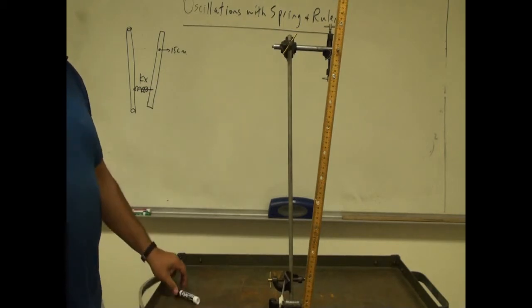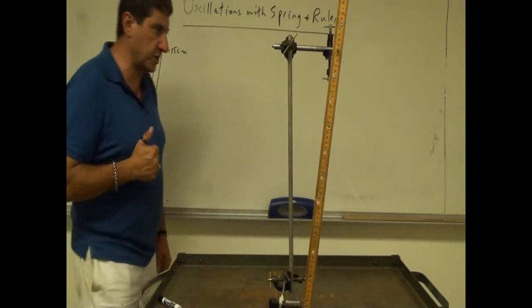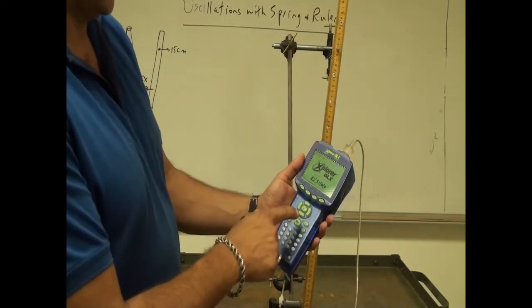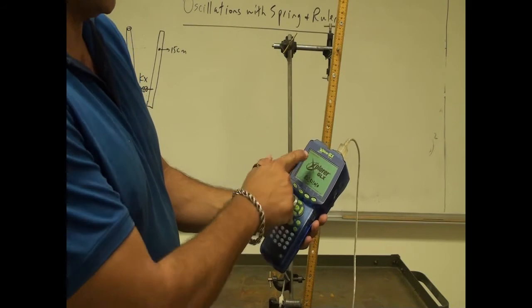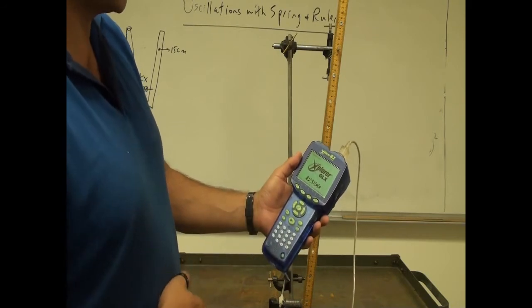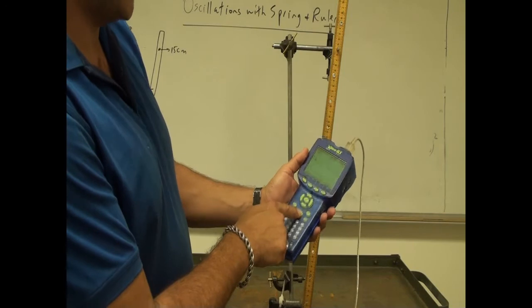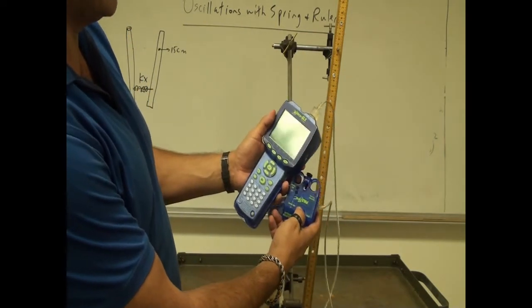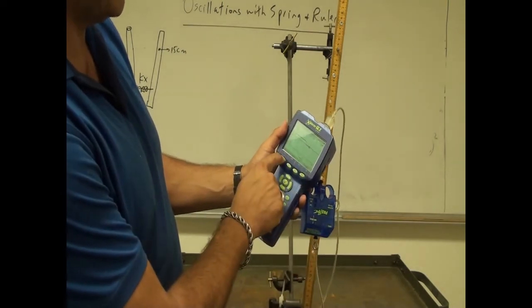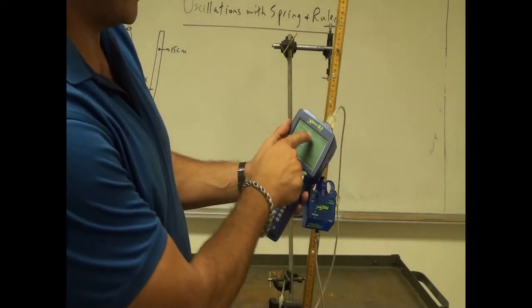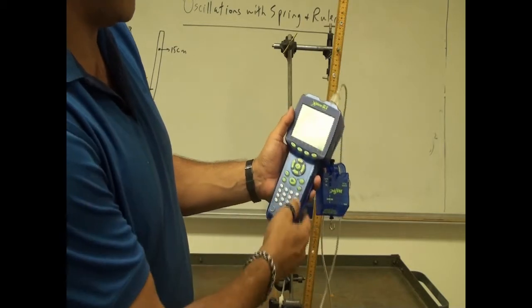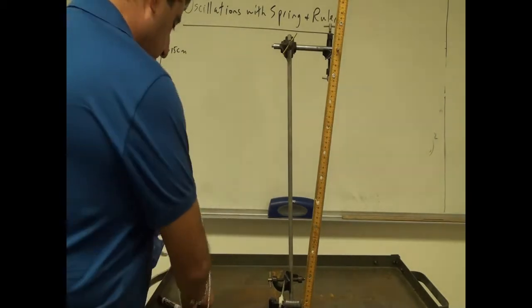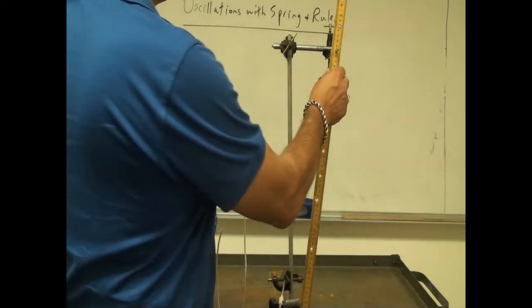I need to measure the spring constant. I have a similar spring here. When you first connect it you get a graph of force versus time. You press play, then press zero on the force sensor, and it goes down to zero. The force originally was some value and goes down to zero — so now I have zeroed the force sensor.